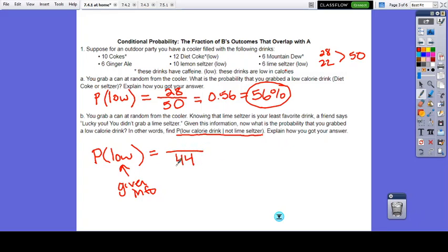Of those 44 drinks, we are imagining these do not exist. Of those 44 drinks, how many of those are low calorie? So not only do some of our low calorie drinks go away, the only low calories we have are these 22 here, but our total also went away. So this comes out to 0.5 or 50%. And again, this really is not the probability of low. This is the probability of a low calorie drink given that it was not a lime seltzer.